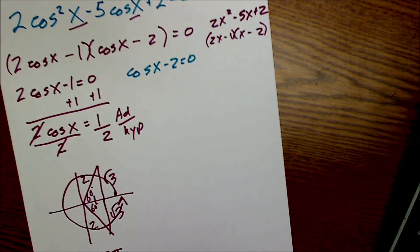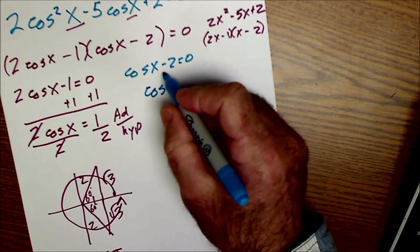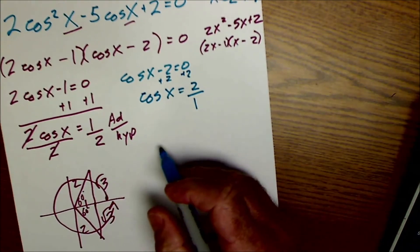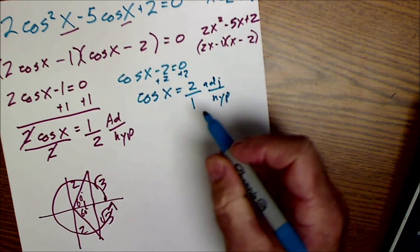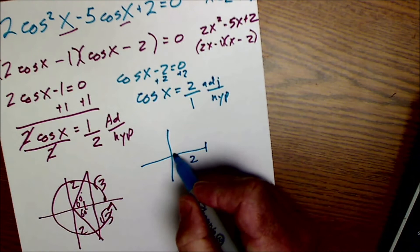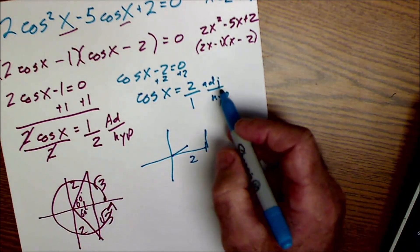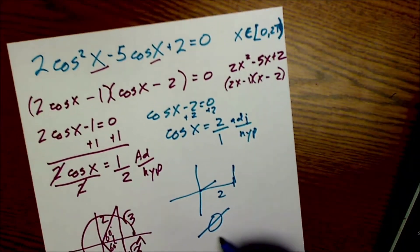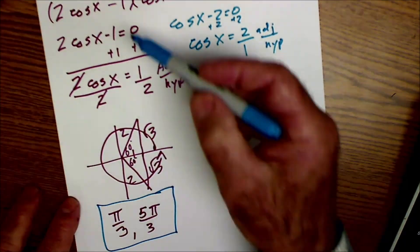Then the second part, cosine of x minus 2 equals 0. I have cosine of x. I'm going to add 2 to both sides. Cosine of x is equal to 2. That's a fraction of adjacent over hypotenuse. When in a right triangle, are you going to have an adjacent of 2 and a hypotenuse of 1? Well, you can't. The hypotenuse has to be long aside. There are no values in this solution. That's going to be the empty set.